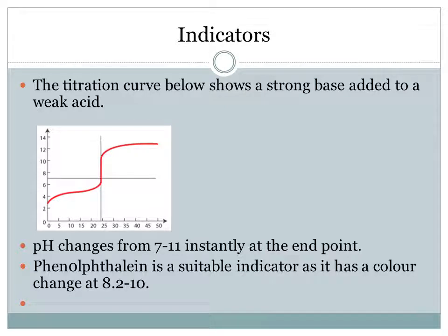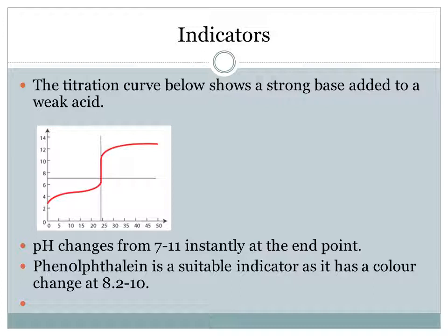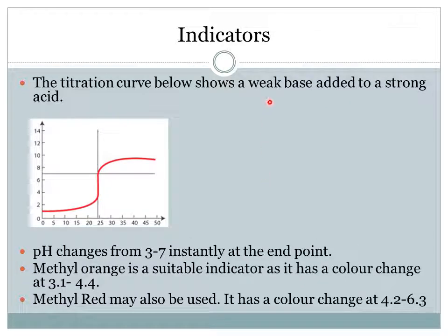The second type of titration is when a strong base is added to a weak acid. We'd expect the end point to be above 7 — between 7 and 11 — because we're dealing with a strong base and a weaker acid. The pH change occurs between 7 and 11. A suitable indicator here is phenolphthalein, which has a color change between 8.2 and 10, falling within that range.